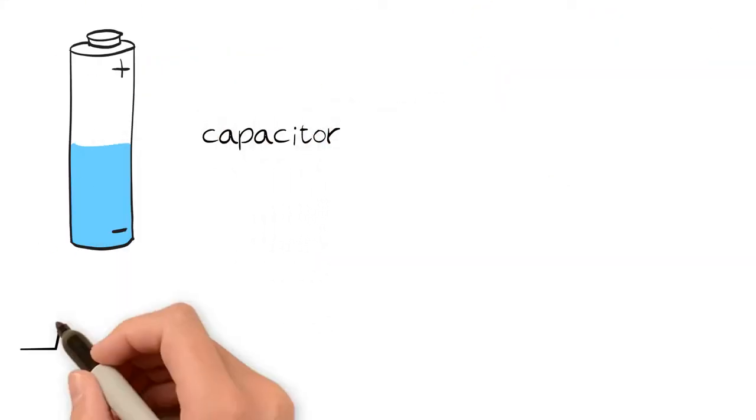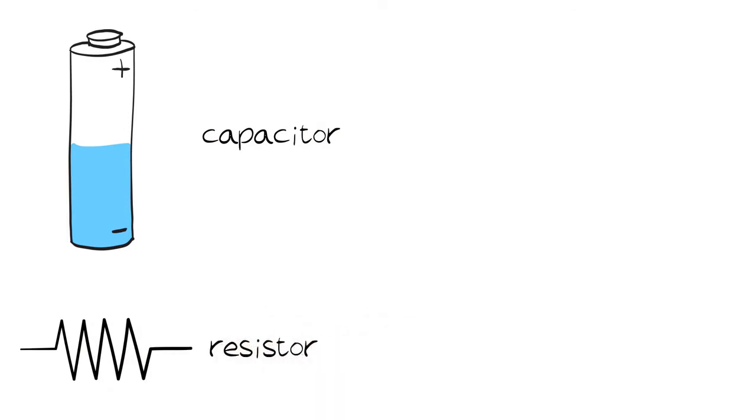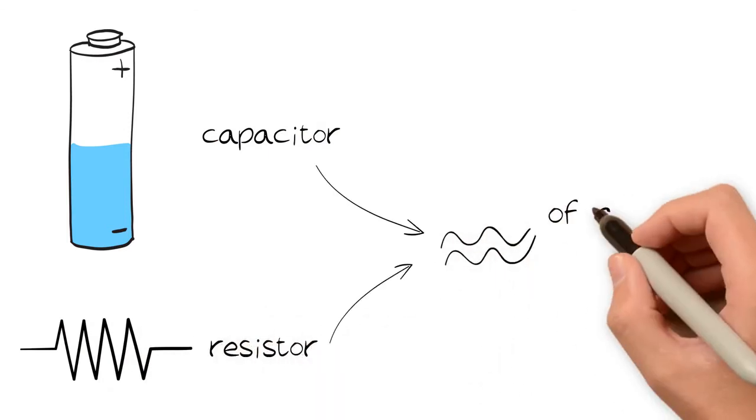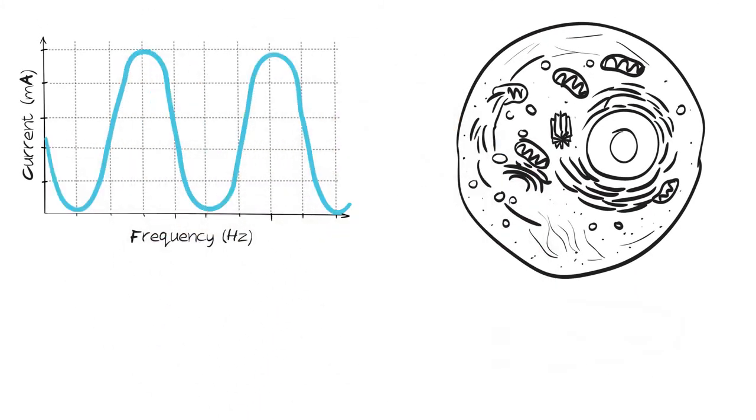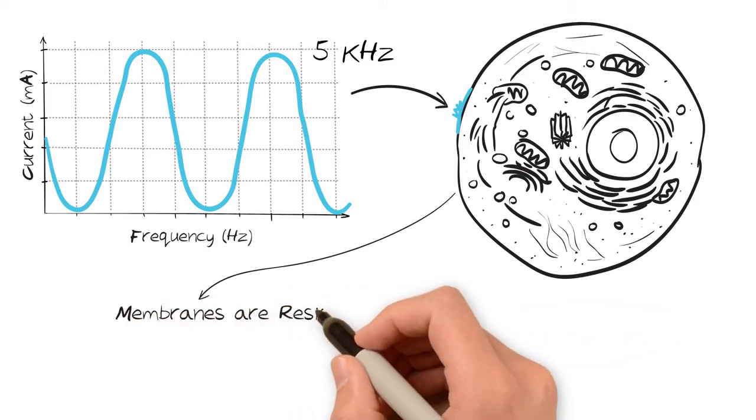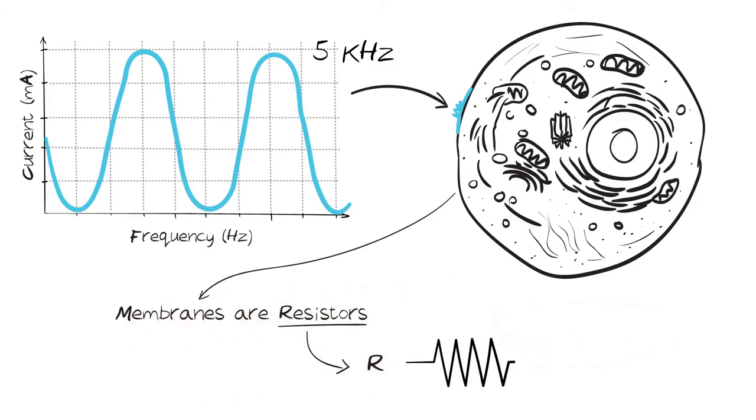Whether a cell membrane acts as a capacitor or a resistor is dependent upon the frequency of the current applied. A low frequency current of 5 kHz is stopped by cell membranes. At this point, the membranes are resistors, so no current is conducted through them.